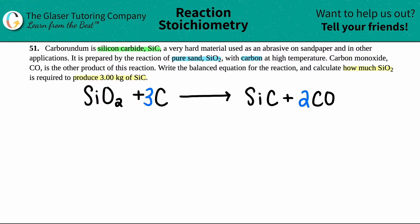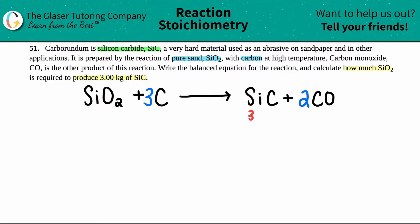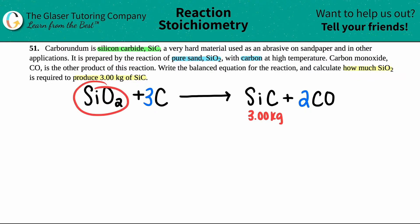Now let's do some stoichiometry. Let's write underneath what they gave us and what we're trying to solve. We want to produce three kilograms of SiC — so wherever SiC is, I note that as the given. And how much SiO2 is required? That's the question — so I put a question mark there.